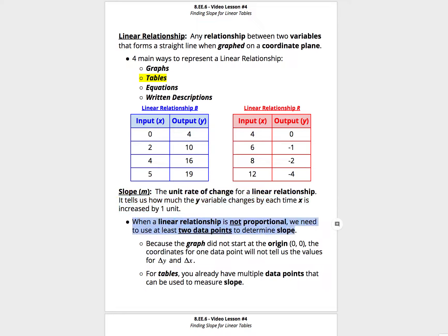Remember that if a linear relationship is not proportional, we're going to need to use at least two data points to determine the slope. This is because the graph didn't start at the origin, so one data point, like zero and four, does not tell us how much the y and the x have changed by from the beginning of time. Instead, for tables, you already have multiple data points that you can use to measure slope. The tables today each have four rows, or four different data points, and we only need two of those data points to determine the slope.